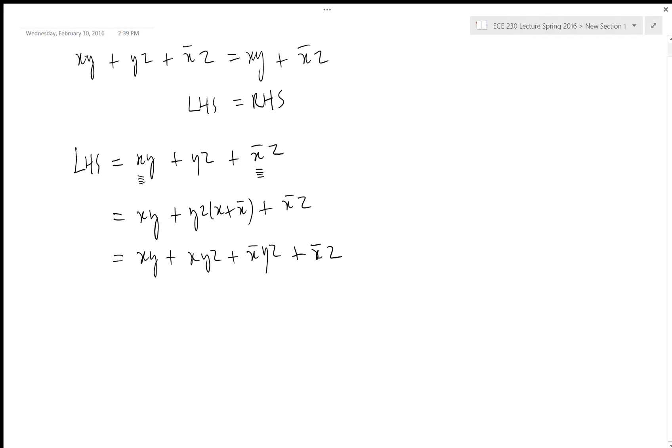If you look at this, this has xy is common, xy here, and then this x naught z, we have x naught z here. So as you see, we can use this and this to combine.